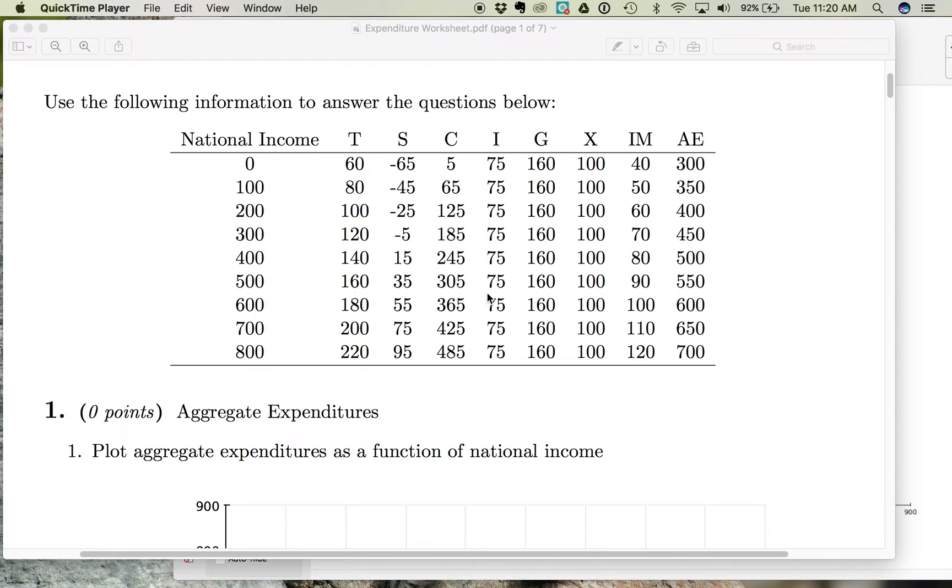We are continuing to look at aggregate expenditures, total spending in the economy, and we've been breaking it down into C plus I plus G plus X minus IM. So we've looked at C and I and G, so now let's look at X minus IM. So we're looking at net exports, or exports minus imports.